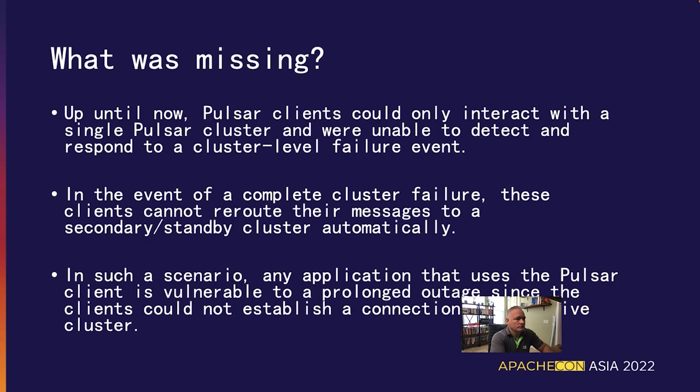So what was missing prior to 2.10? Pulsar clients could only interact with a single Pulsar cluster and were unable to detect and respond to a cluster-level failure event. In the event of a complete cluster failure, these clients cannot reroute their messages to a secondary or standby cluster automatically. This would eventually lead to prolonged outages at the application layer.